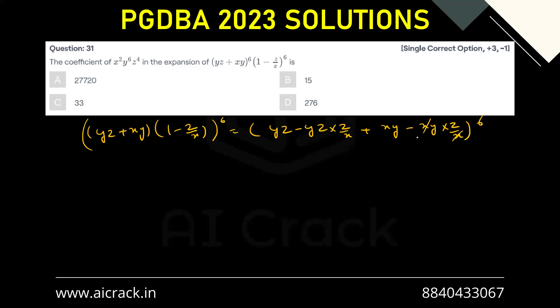So this x and this x gets cancelled out. This yz and this y gets cancelled out. So what we are left with? We are left with (xy - yz²/x) whole raised to power 6.